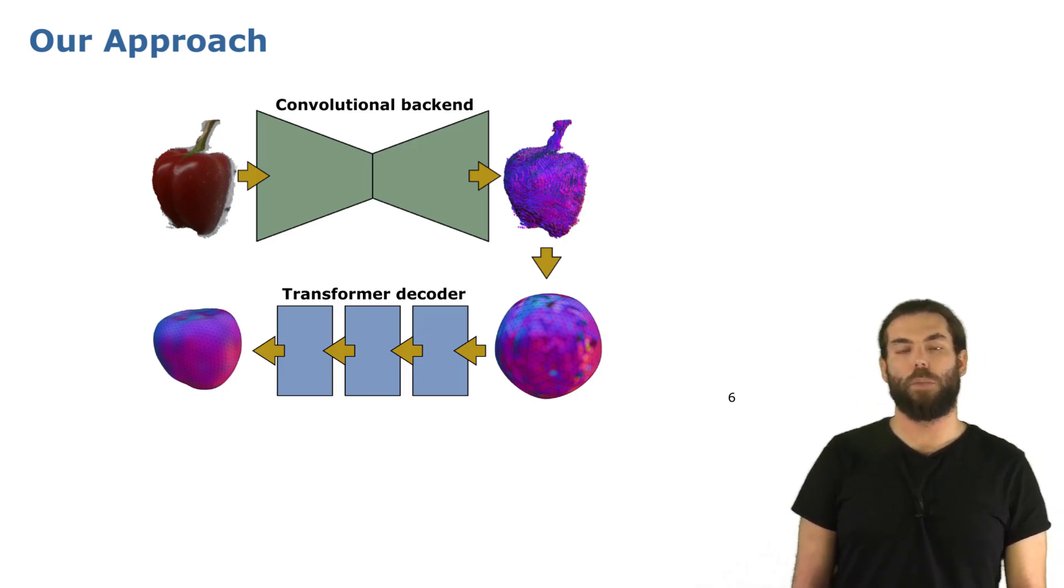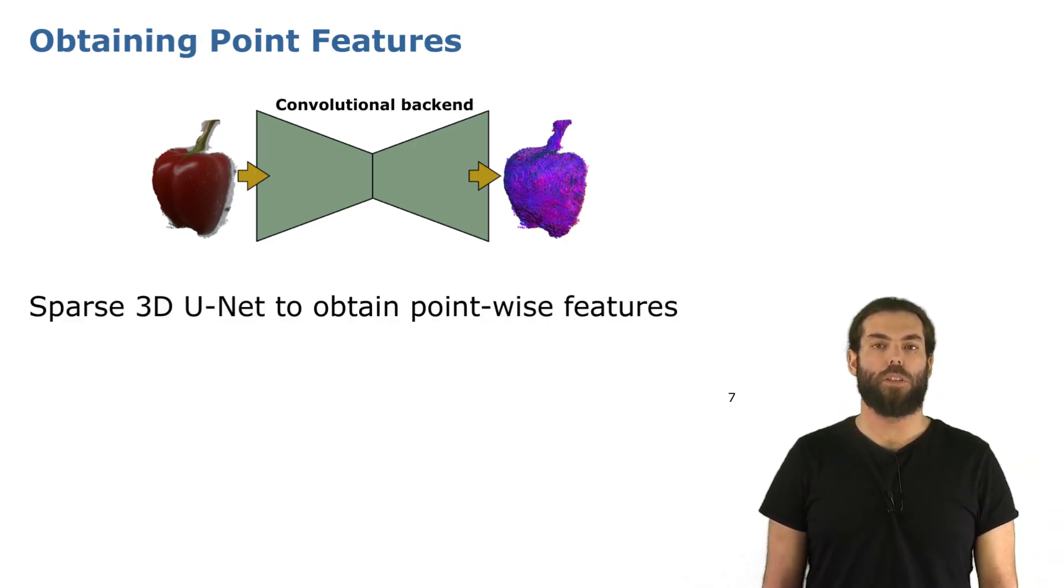Now let's start from the beginning. We have our convolutional backend, which is simply a 3D UNet with sparse convolution. And the goal here is to obtain for each point in the input, a feature that represents the spatial geometry of each point. What you can see here on the right of this image, we represent the feature with colors to underline the different features that we get for each point.